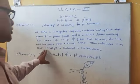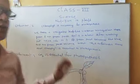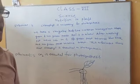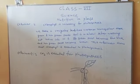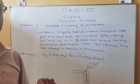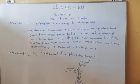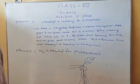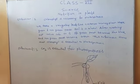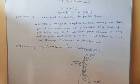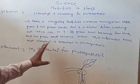This experiment shows that chlorophyll is essential for photosynthesis. In the variegated leaf, we boil it in alcohol, and after washing it, we put iodine solution on it. We see that the non-green part becomes brown in color, while the green part of the leaf, which was marked earlier, becomes blue-black.